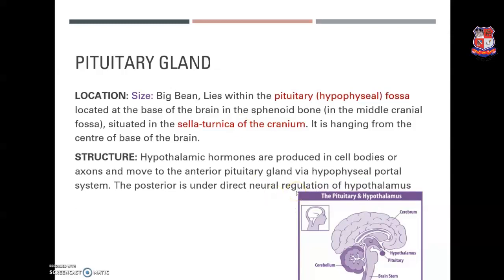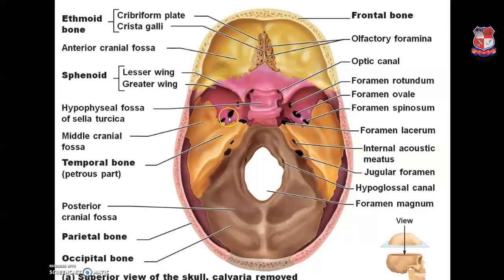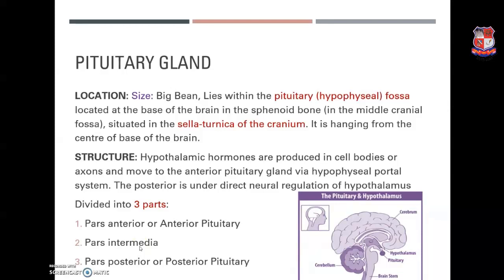The pituitary gland is roughly bean-sized and lies within the hypophyseal fossa located at the base of the brain in the sphenoid bone, situated in the sella turcica region of the cranium, hanging from the center of the base of the brain. Generally, hypothalamic hormones are produced in cell bodies or axons and move to the anterior pituitary gland via the hypophyseal portal system.